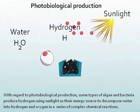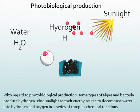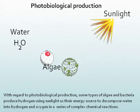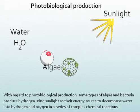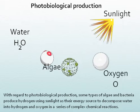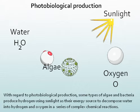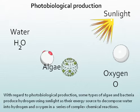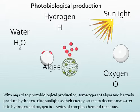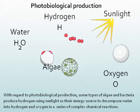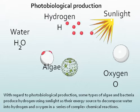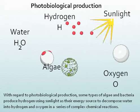With regard to photobiological production, some types of algae and bacteria produce hydrogen using sunlight as their energy source to decompose water into hydrogen and oxygen in a series of complex chemical reactions.